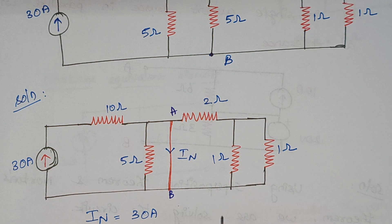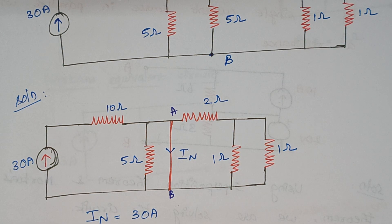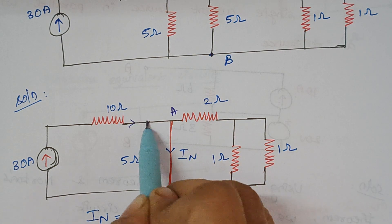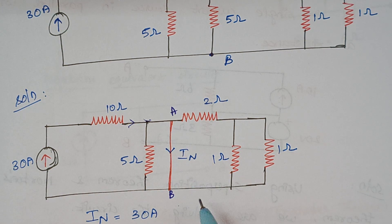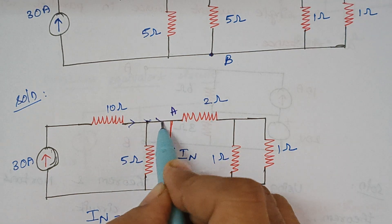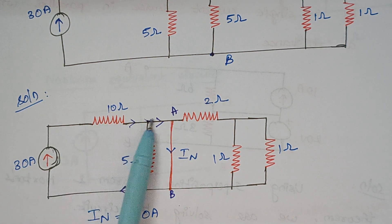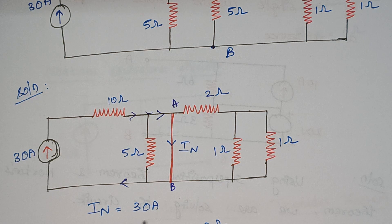Can you guess what will be the current that flows through terminal AB? We have a current source here, and a current will always select the least resistance path. So this current will flow in this way, and after reaching this junction the current won't get divided into two, because we are having a 5 ohm resistance on one side and nothing (a short circuit) on the other side. Therefore the current will always prefer to flow through the least resistance path, and the entire 30 amps will be flowing through terminal AB. Therefore the short circuit current is 30 amps.